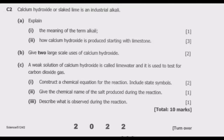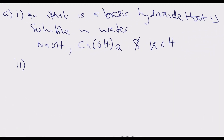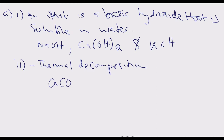Part two: explain how calcium hydroxide is produced starting with limestone. This is worth three marks, so the answer should cover three steps. Starting with limestone, which is calcium carbonate, the first step is thermal decomposition.